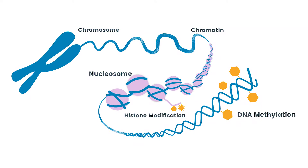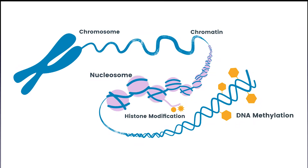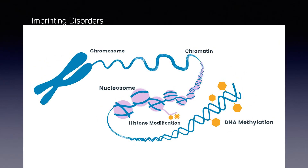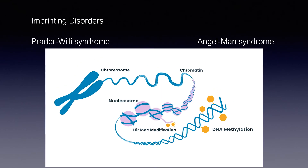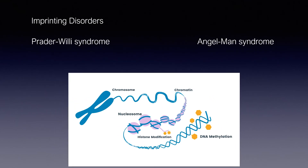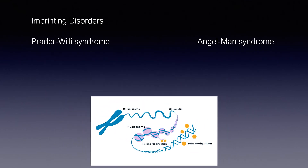Imprinting is the mechanism by which genes are silenced via methylation of specific sites on DNA. When one copy of a gene is silenced, the other can be expressed.